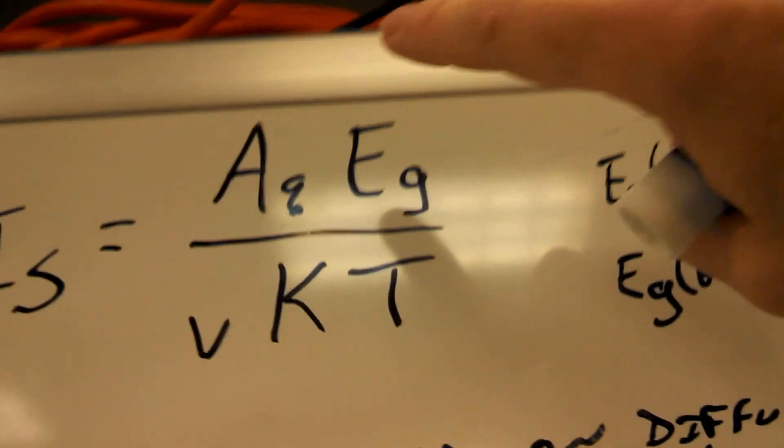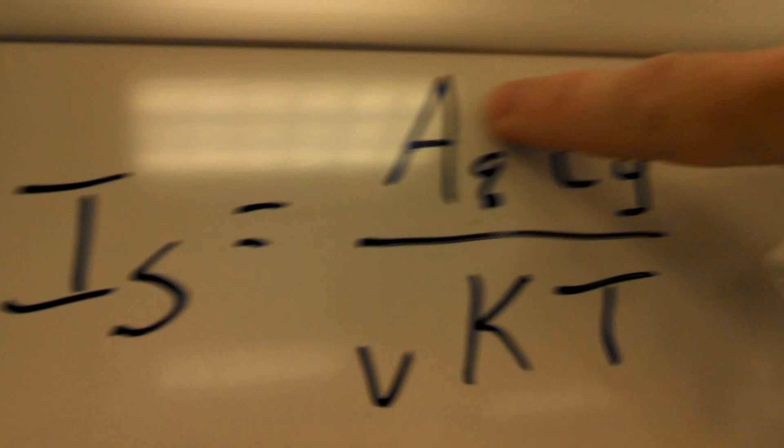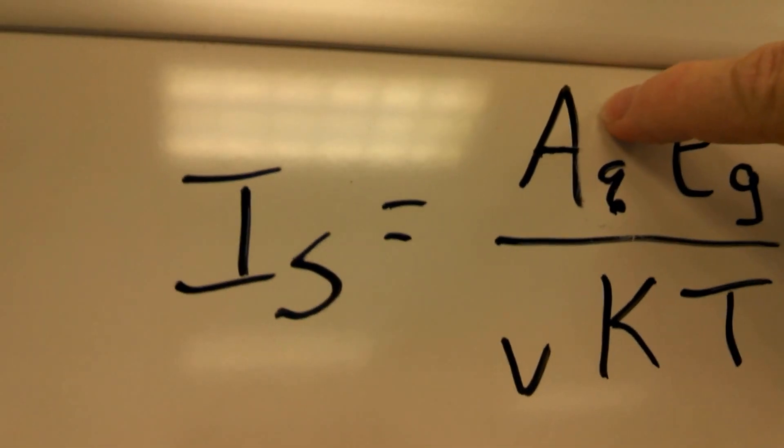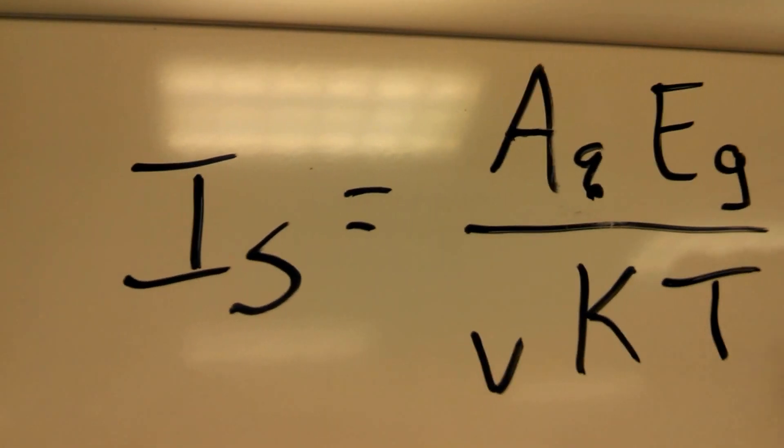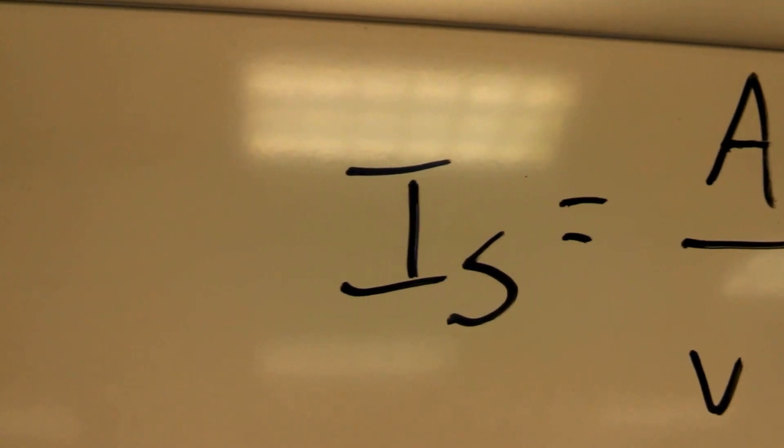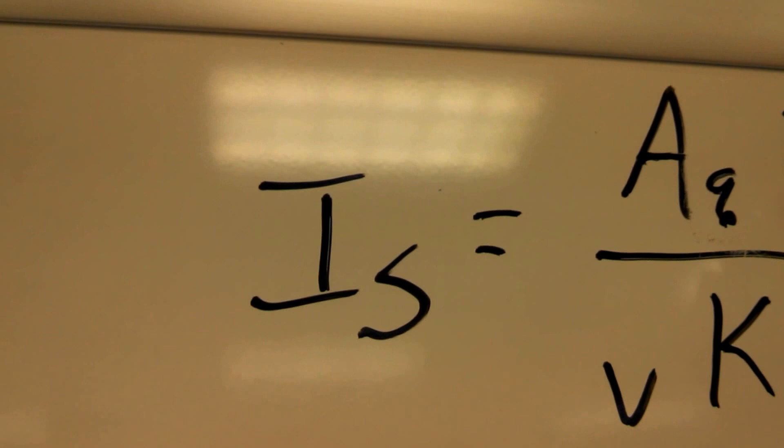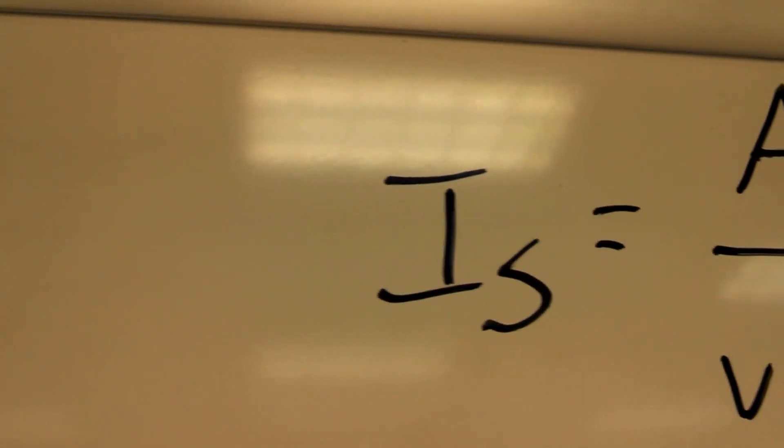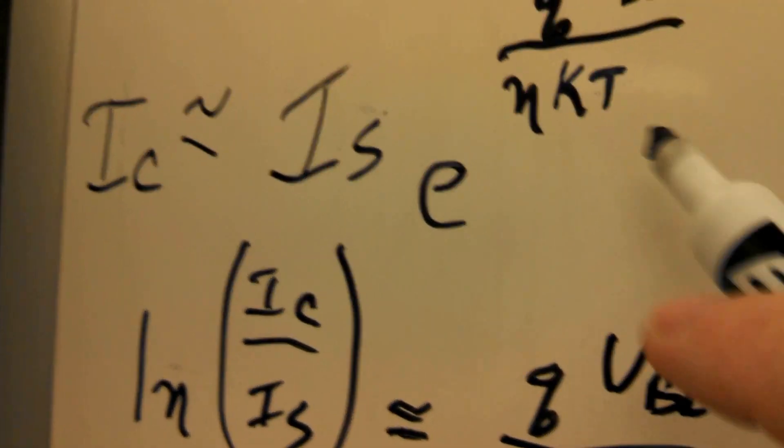What's IS? IS is a constant A, which is based on the diffusion coefficients of the electrons and holes inside the BJT. Q, again, elementary charge, KT. I mean we see this. Here's Q, QKT, Q over KT again, which is the same as over here.